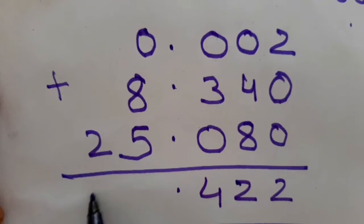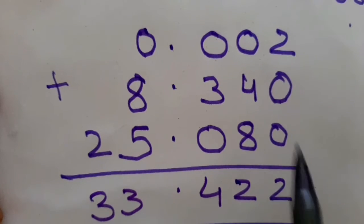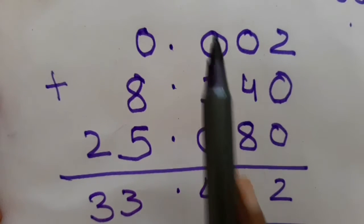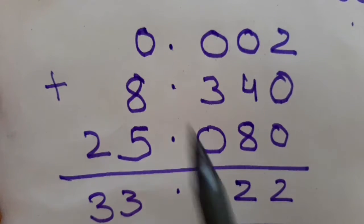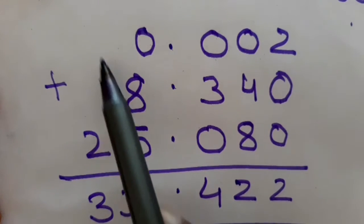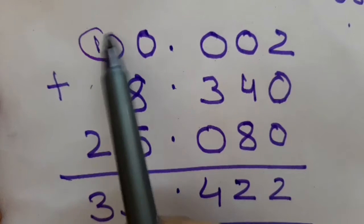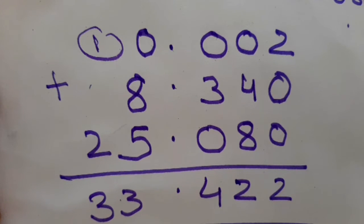Now I have simply added: 2. Then 8 plus 4 is 12. 3 plus 1 is 4. 8 plus 5 is 30. 2 plus 1 is 3. So the answer is 33.422.